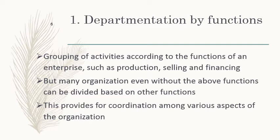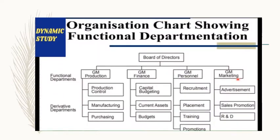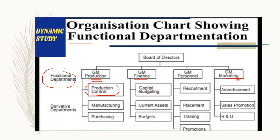Departmentation by functions provides coordination among various aspects of the organization. For example, well-defined functional departments like production, finance, personnel, and marketing exist. Under production: production planning and control, manufacturing, purchasing. Under finance: capital budgeting, current assets, budgets. Under personnel: recruitment, placement, training, and promotions. Everything is divided according to the function performed — this is called functional departmentation.